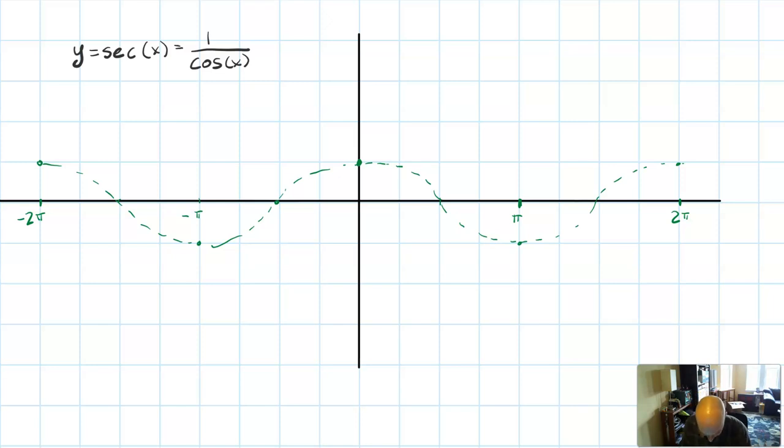Now I'm going to do the same thing, which is put vertical asymptotes wherever cosine of x is zero, because every vertical asymptote means that secant of x is one over zero, which is undefined. That's why it makes a vertical asymptote.